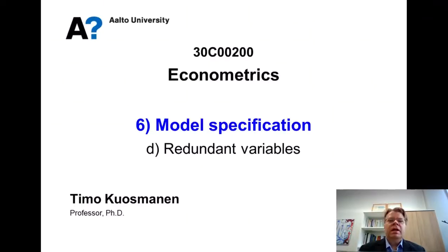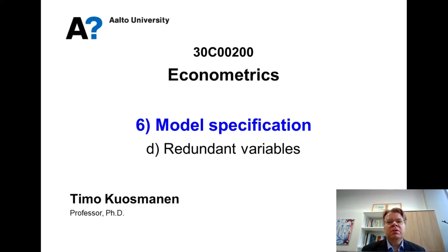In the previous lesson, we examined in detail the omitted variable bias — that if we do not include in the model some variable that should be there. So for the sake of completeness in this lesson, I will consider the opposite case of redundant variables: specifically, what happens if we do include some variables in the model that do not actually have any impact on the dependent variable y.